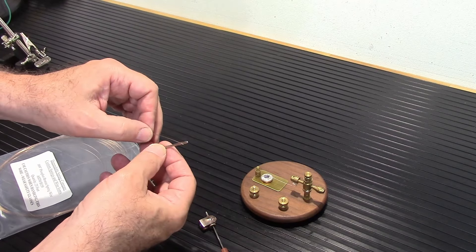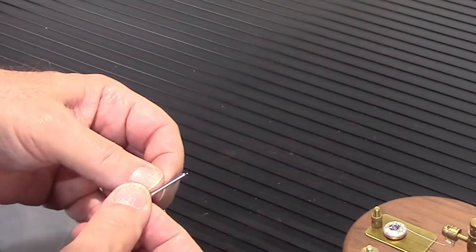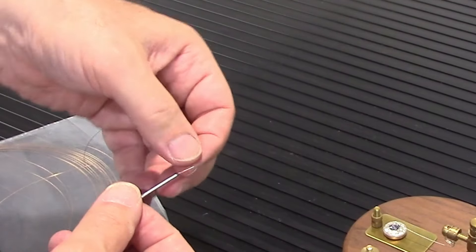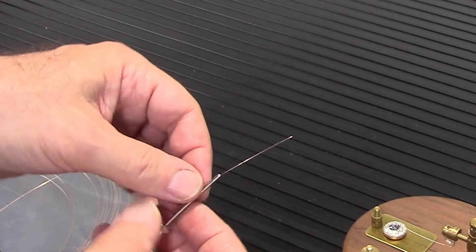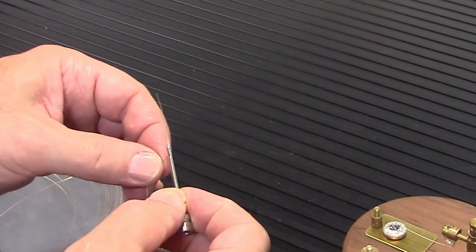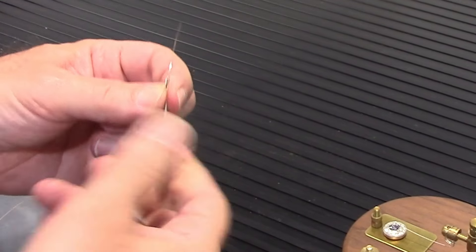So all I'm going to do is thread the needle. There it goes. Okay, so I'm going to pull out about that much length, bend this, and now I'm going to start winding my spring.